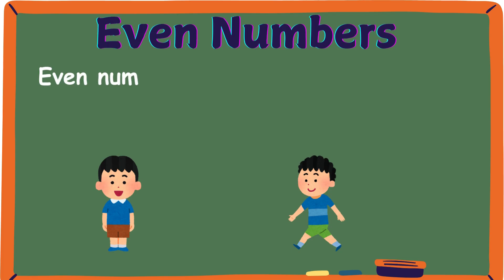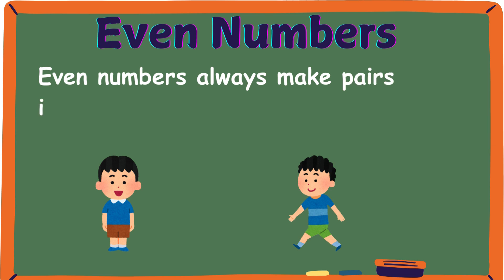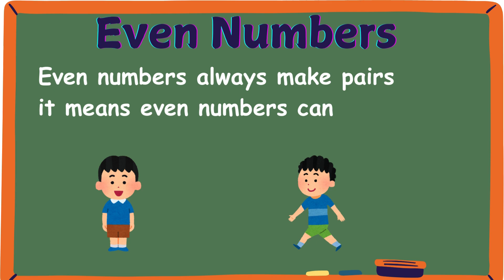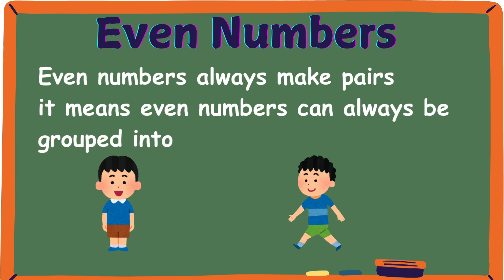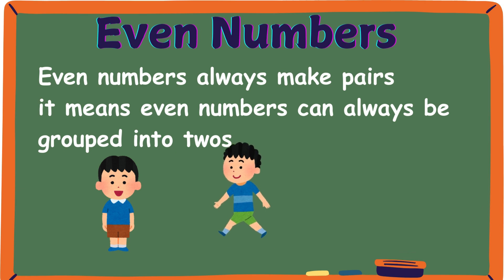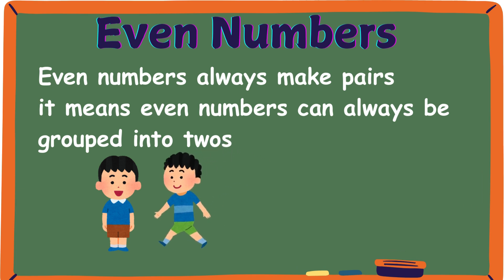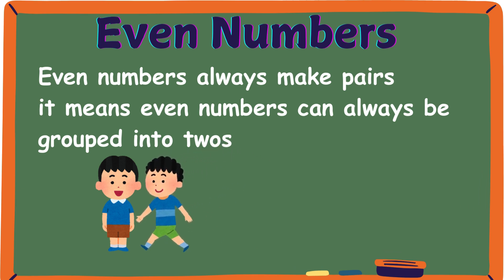Even numbers always make pairs. It means even numbers can always be grouped into twos. Look at these two boys. The boy on the right can make a pair with the boy on the left, because pairs are basically groups of twos.